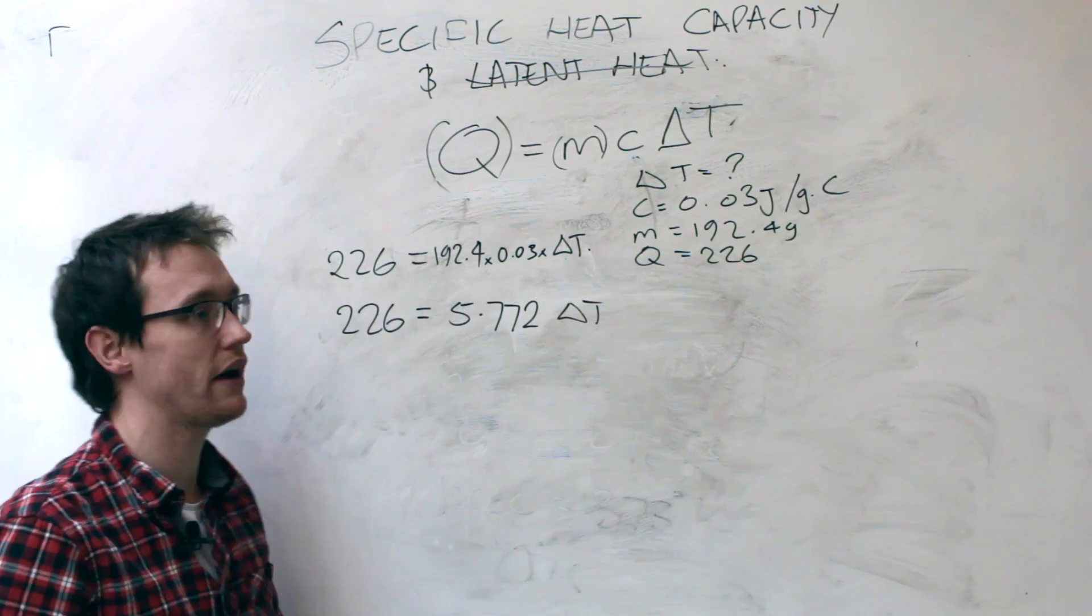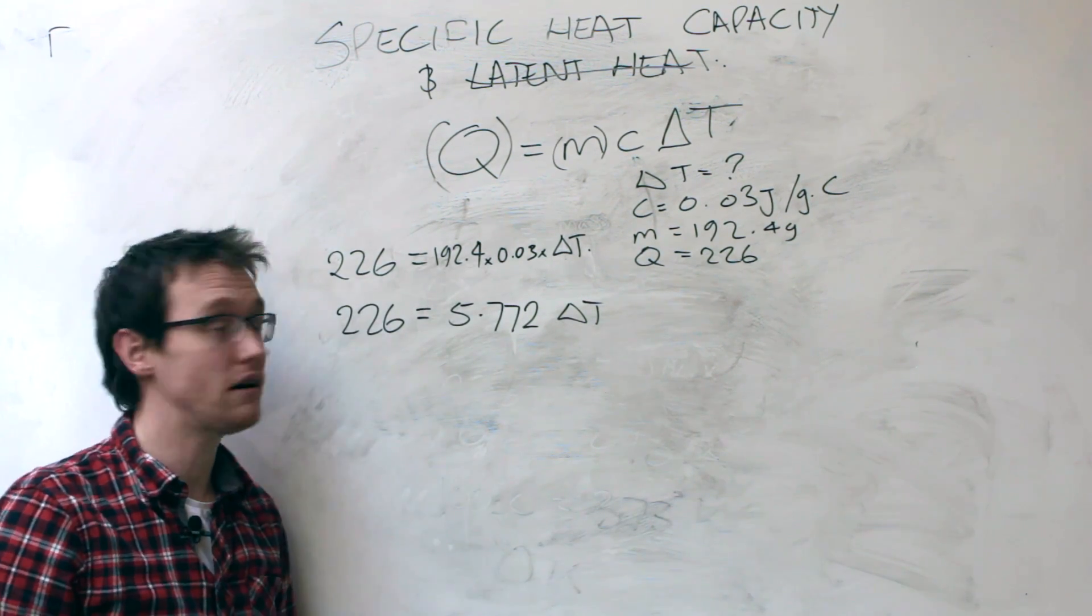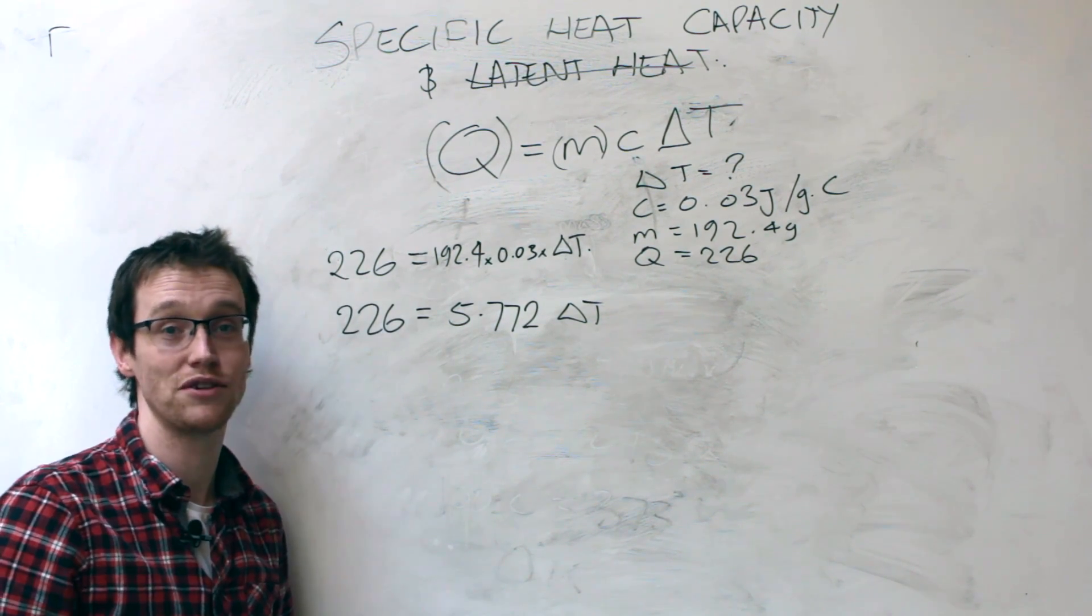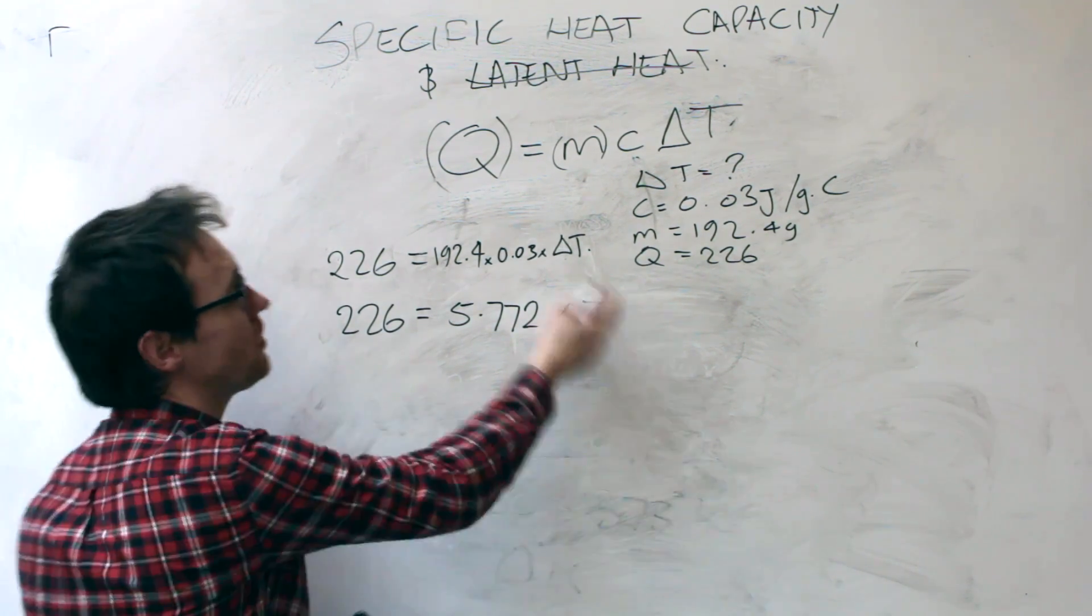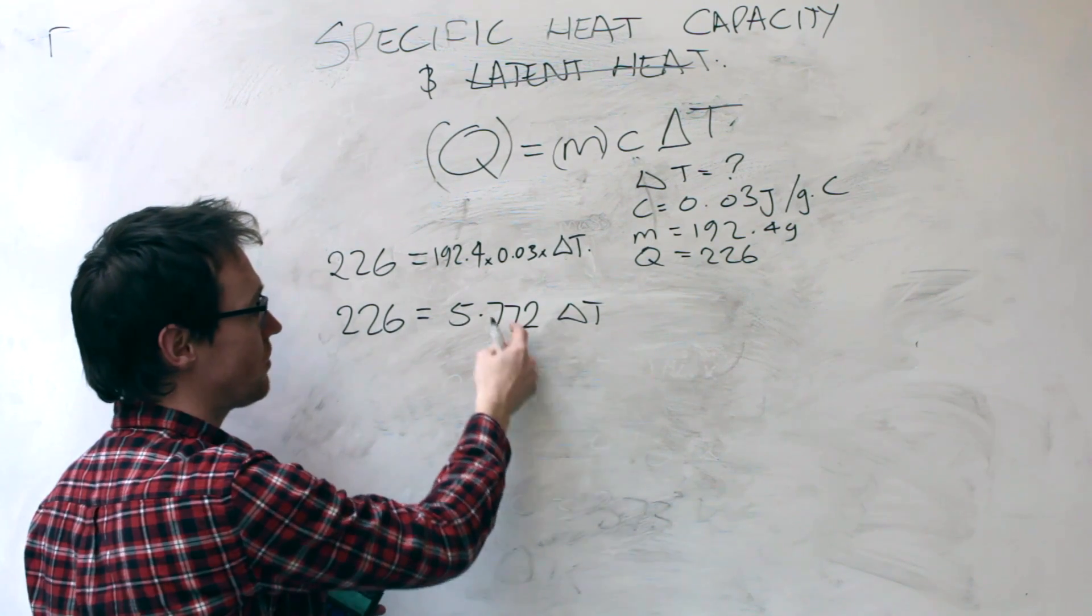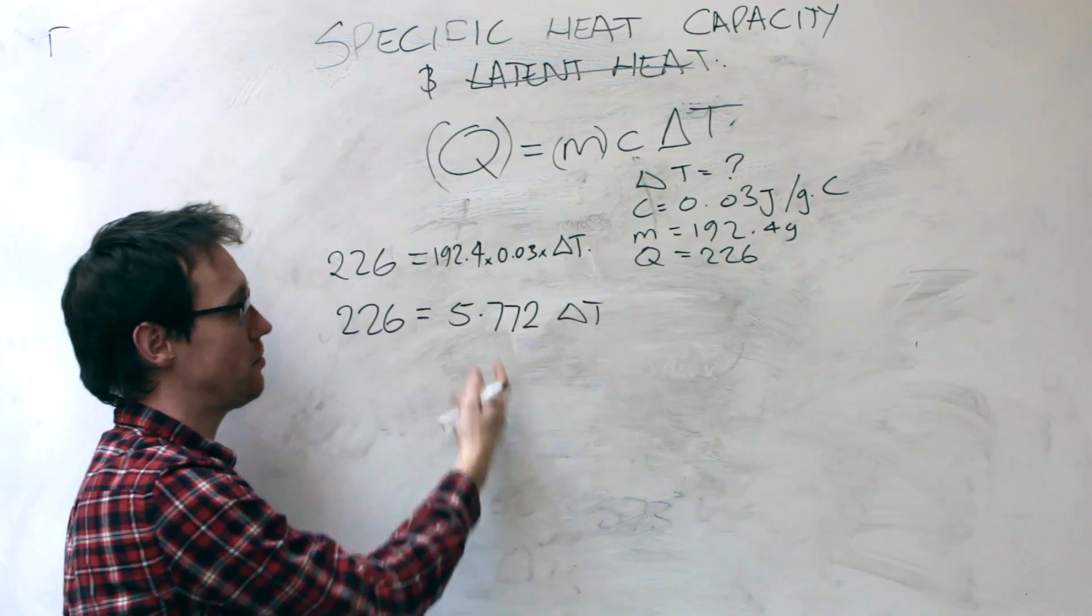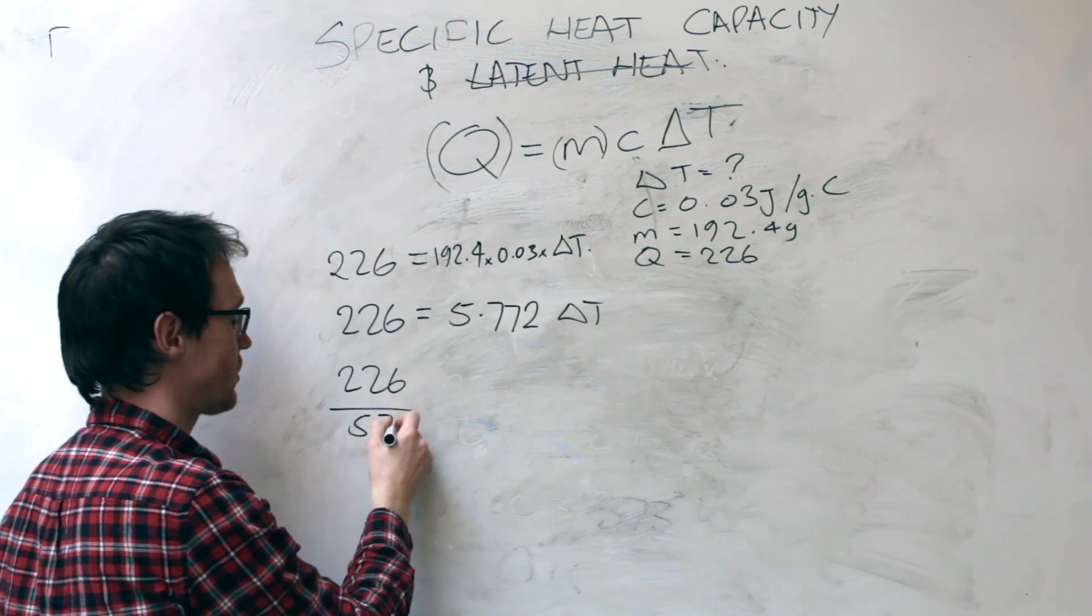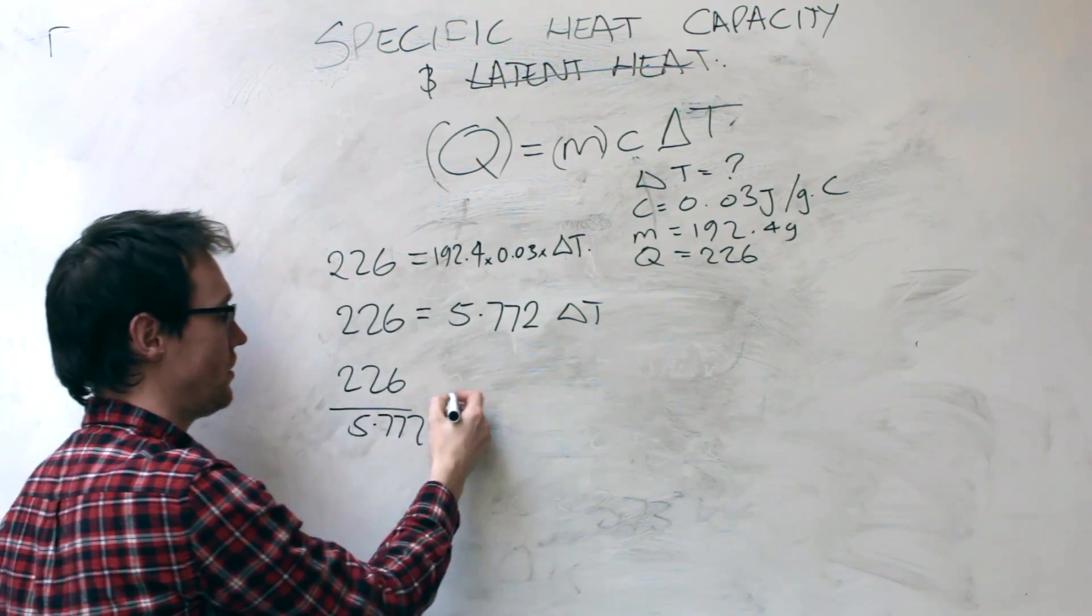Now, unfortunately, because this is a multivariable equation, I can't give you one of the helpful little formula triangles. So you're just going to have to learn how to rearrange your formula. We want delta T, so those two are times together, so I can divide through by 5.772, and I prefer to think of moving that under also.